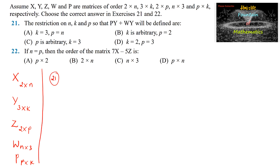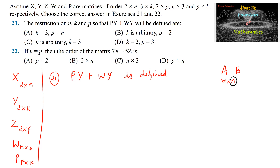Let us consider question 21. The restriction on N, K, and P so that PY + WY is defined. Matrix P into Y plus WY is defined. We know that in multiplication of matrices, the number of columns in the first matrix (M by N) must be equal to the number of rows in the second matrix.